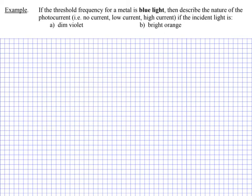Hello everyone, here's another Physics 30 example. This time we're in Unit 5, which is atomic theory, and this lesson 2 is the photoelectric effect.